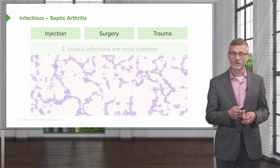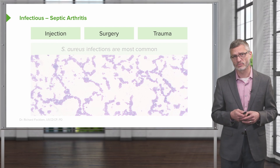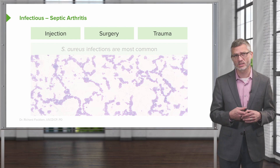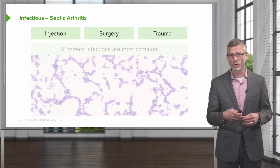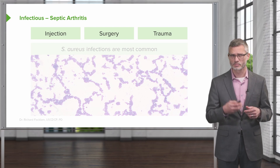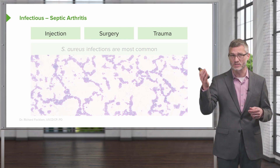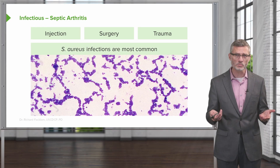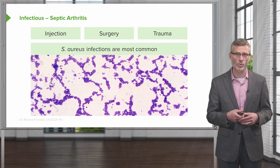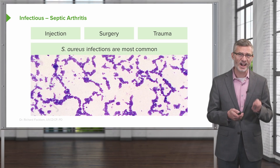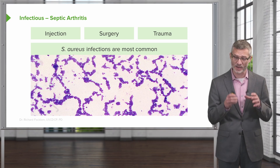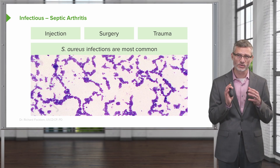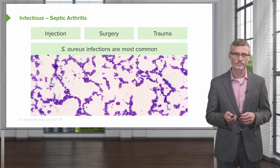In patients who do have risk factors for an effusion — for example, having recently undergone a procedure like an injection, recent surgery, or any recent trauma to the skin — it's important for us to know that we're dealing with bacteria, most commonly staph aureus. This is a high-stakes diagnosis to identify a septic joint, so we have to know our anatomy and know how to access the joint if we need to.